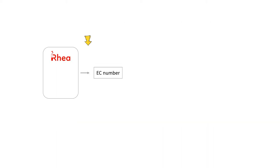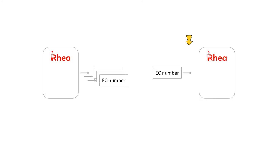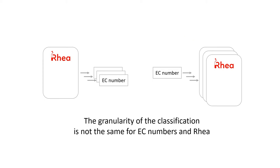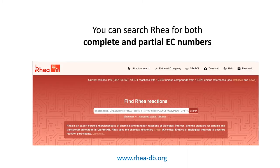Note that a RIA reaction can be mapped to several EC numbers, and an EC number in turn can be mapped to several RIA reactions, as the granularity of the classification is not the same for EC numbers and RIA.